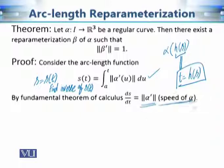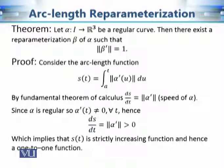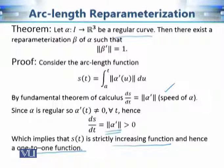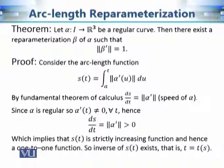Since the curve is regular, ds/dt = ||alpha'(t)|| > 0 strictly — it is never allowed to equal zero. Hence s(t) is a strictly increasing function, which means it is one-to-one. A strictly increasing function never stops at any point, it always keeps increasing. Since s(t) is one-to-one, it has an inverse, and we can write t = t(s). This theorem confirms that the arc length parameter has an inverse under the condition that the curve is regular.